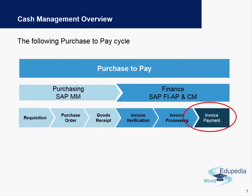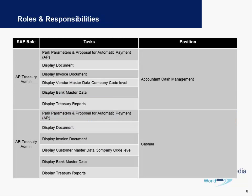This is what we have already discussed in the Accounts Payable module, where the purchase order was received, followed by invoice verification and invoice processing, which finally leads to an invoice payment.